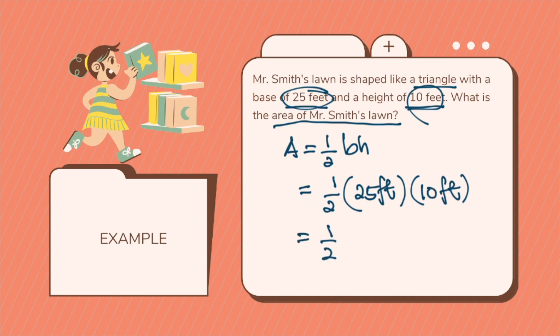So 25 times 10 is 250 feet squared or square feet. And then 250, half of that will be 125 square feet or feet squared. So this is the area of Mr. Smith's lawn.